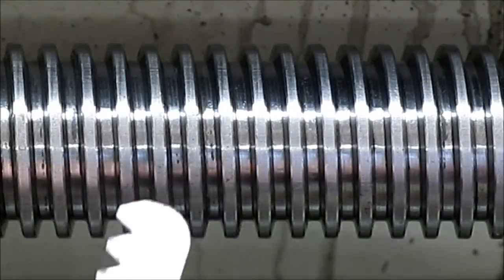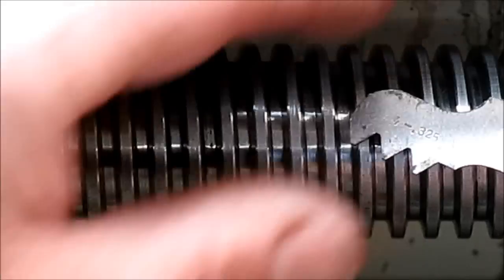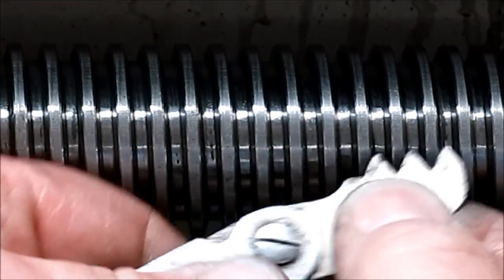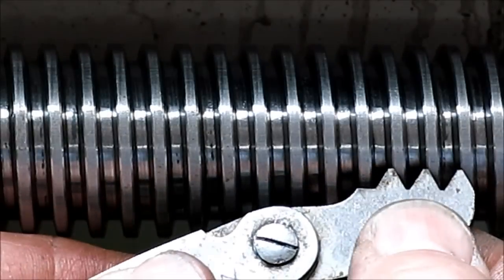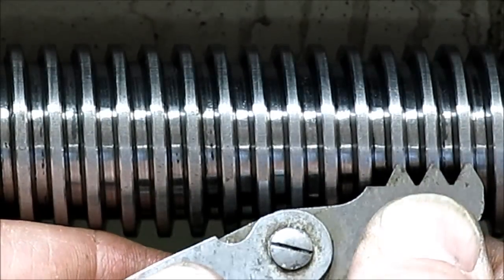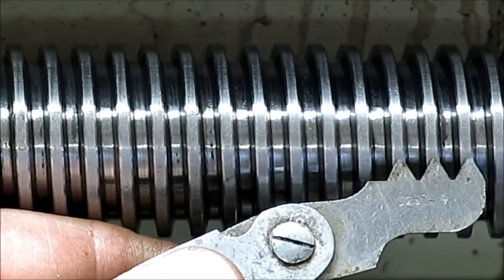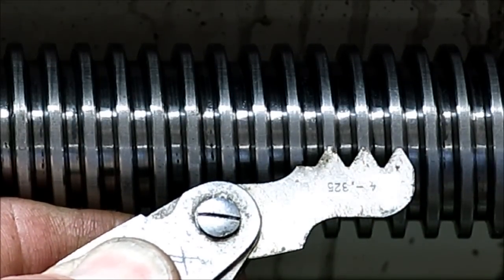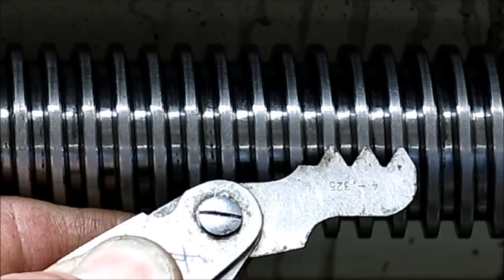Now, just to kind of verify that, I got my trusty little thread gauge out here. Make sure you guys can see that. And that's the four, right? This is for a sharp V thread. We're going to lay it right on the center. Am I in the frame there? Let me back up here. We're going to lay it right on the center and it matches up quite nicely.